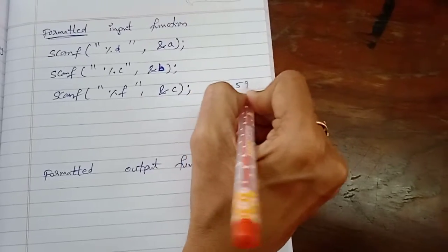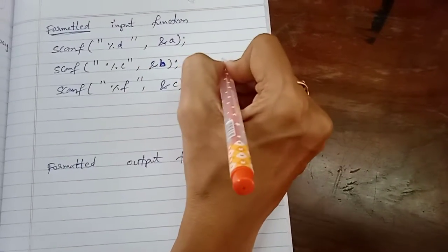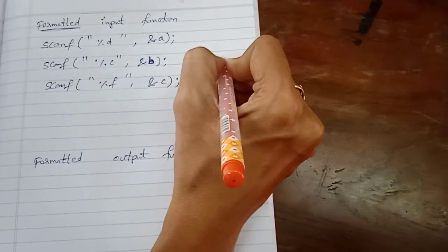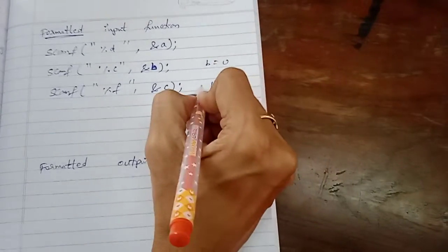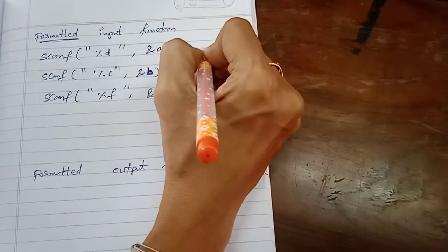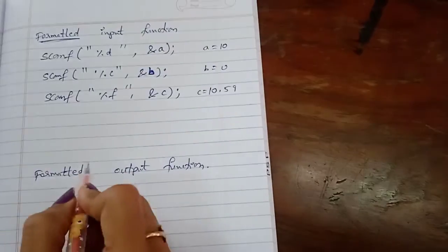For example 10.59. And here for example in the place of B, that is B is equal to U. Here variable C contains now 10.59, and in this integer A is equal to for example just 10.